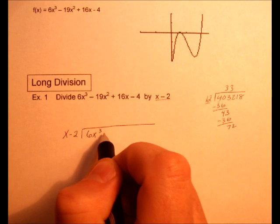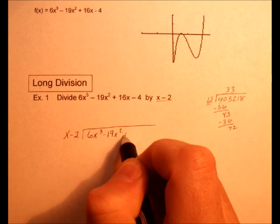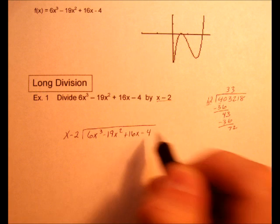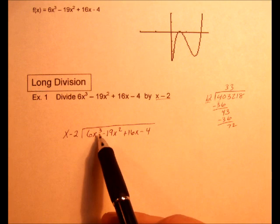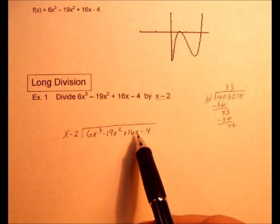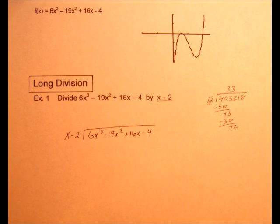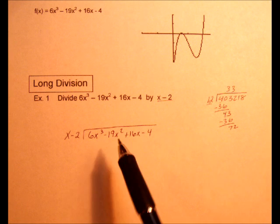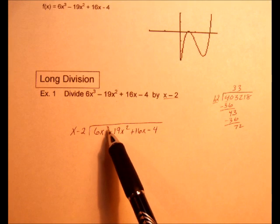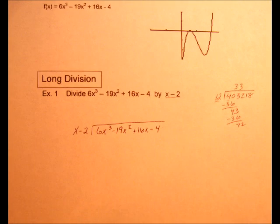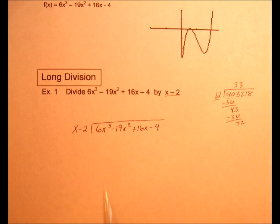And when we're doing this, we always want to make sure we put it in order. We start with x cubed, then x squared, then x, then the constant value. And we have to make sure every one is accounted for. Meaning, if you start with a 3, you have to have 3, 2, 1, and then no x's. And the same thing with what we're dividing by.